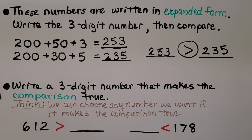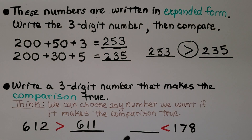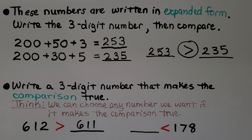Here we need to write a three-digit number that makes the comparison true — we can choose any number as long as it makes it true. We have 612 is greater than blank. We can put any number that 612 is greater than, like 611, 610, 609, 608 — lots of choices. For this one, some number blank is less than 178. We can choose any number less than 178, like 177, 176, and so on all the way down to zero.